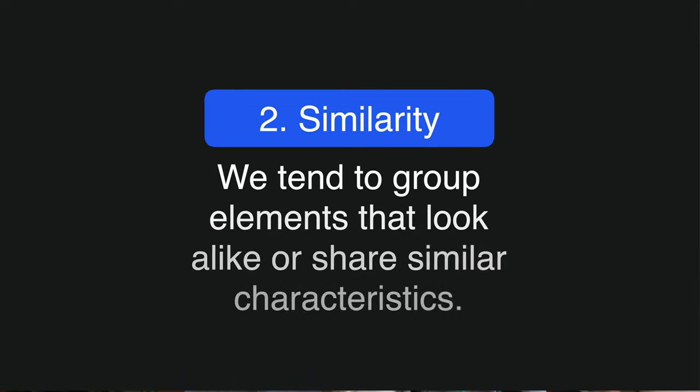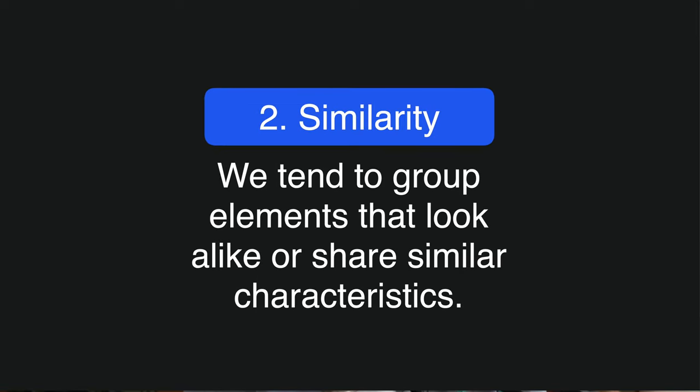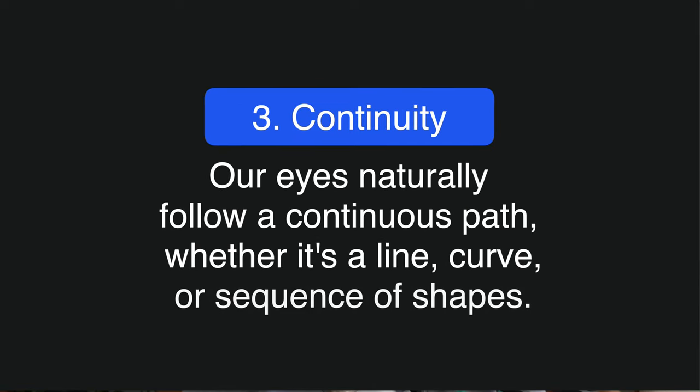Next up is similarity. We tend to group elements that look alike or share similar characteristics. Here, the dots are all the same distance from one another, but we tend to see each row as a separate group because of the alternating colors. The third principle is continuity. Our eyes naturally follow a continuous path, whether it's a line, curve, or a sequence of shapes.